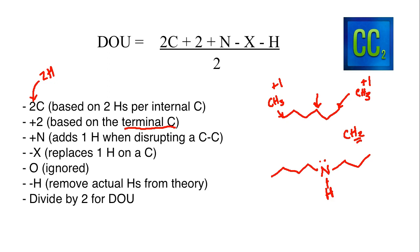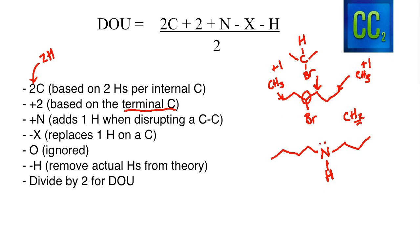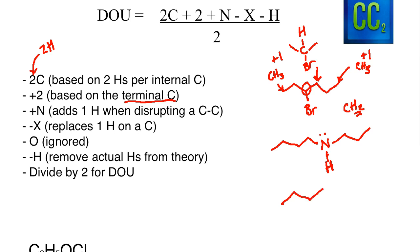Now think about what happens if I have a halide — say a bromine coming directly off of a carbon. That carbon would be CH instead of CH₂, because the bromine replaces a hydrogen. So if I have a halide, I'm going to have one less hydrogen on that chain, which is why I have minus X for every halide present. Now if I have an oxygen, think about what it would look like with an ether — an oxygen can be ignored because when an oxygen is present it does not really cause any disruption in the number of hydrogens expected. So we can ignore any oxygens when calculating degrees of unsaturation.